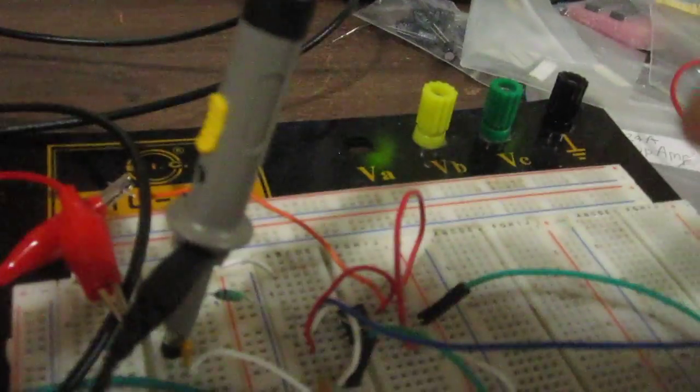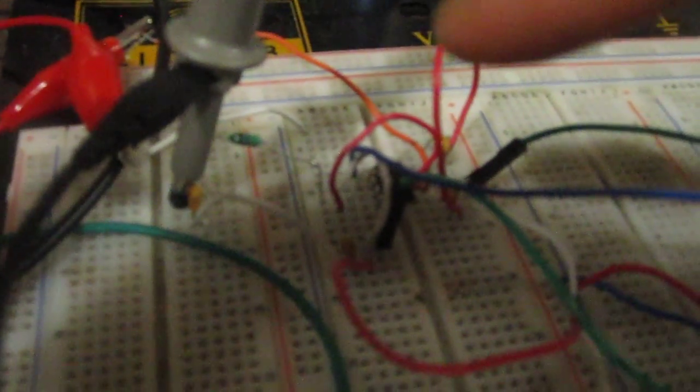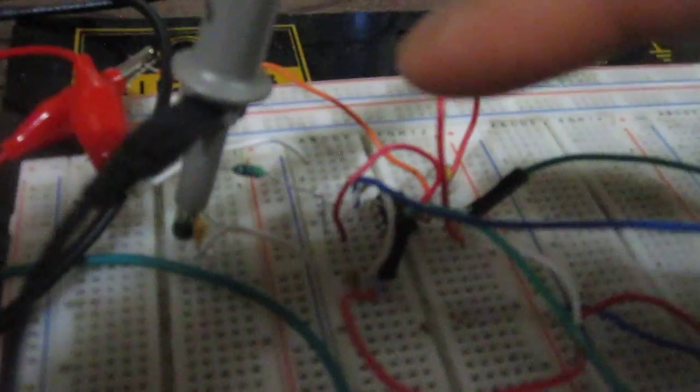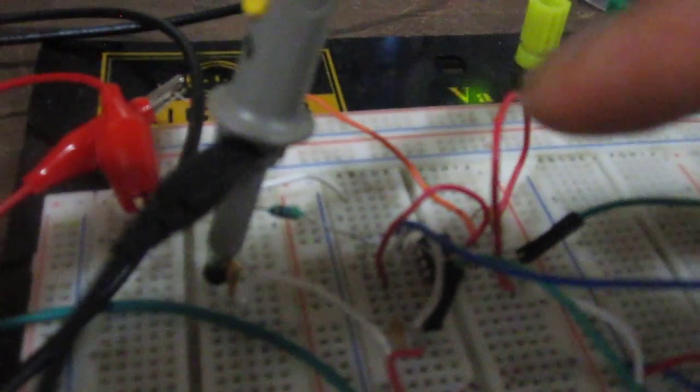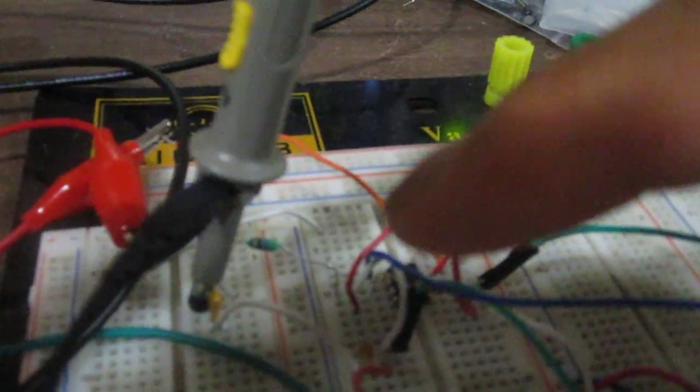So the only thing separating the square wave signal from the sine wave signal is the single LC network composed of an inductor and a capacitor. So through this LC network, we're able to convert the square wave signal into a sine wave signal.